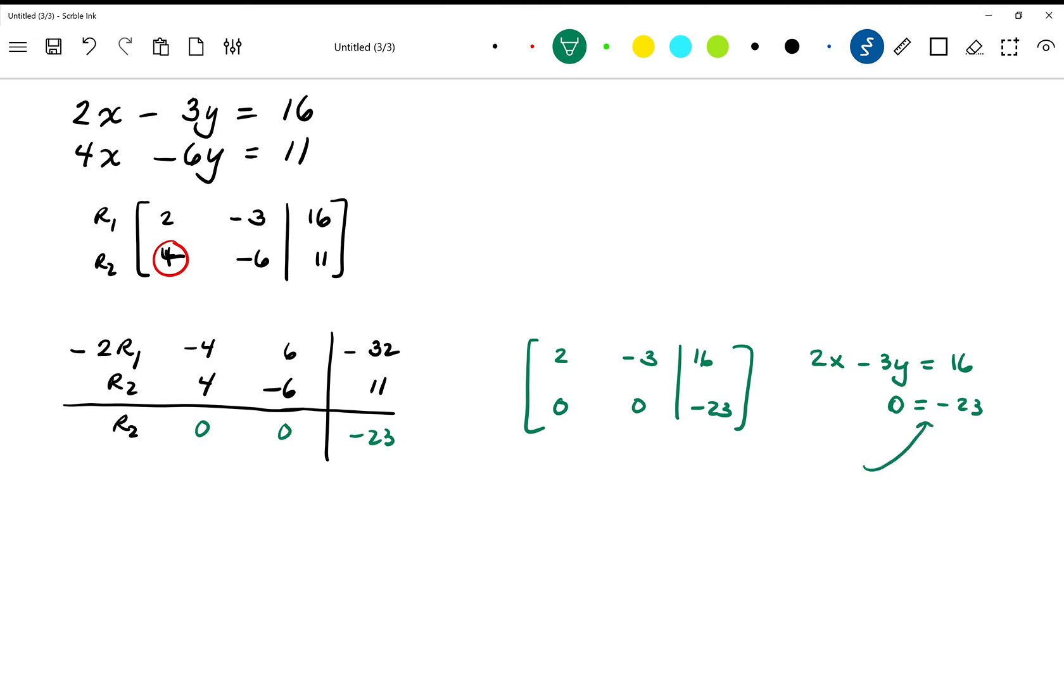Now if you got this before, that would tell you that there's no solution to the system, and that is the same thing here. So having this kind of a row happen where you have zeros on one side of the augment and another number on the other side of the augment, this would tell you that there is no solution to the system.